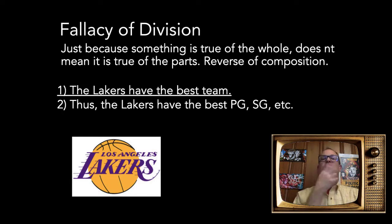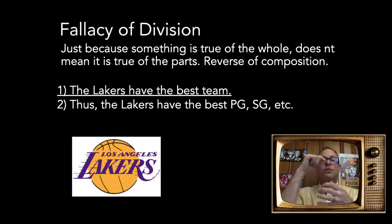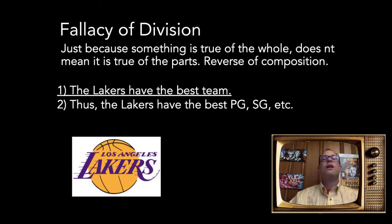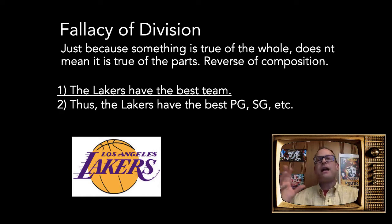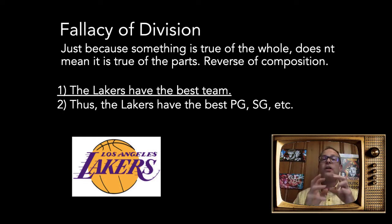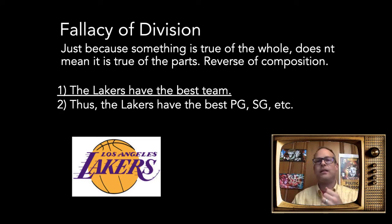The fallacy of division is the reverse of composition — just because something is true of a whole doesn't mean it's true of individual members. For example: 'The Lakers have the best team, thus the Lakers have the best point guard, shooting guard, small forward, power forward, and center.' That's wrong. A team might be the best because the players work better together than other teams with individually superior players who lack cohesion and shared game plan.